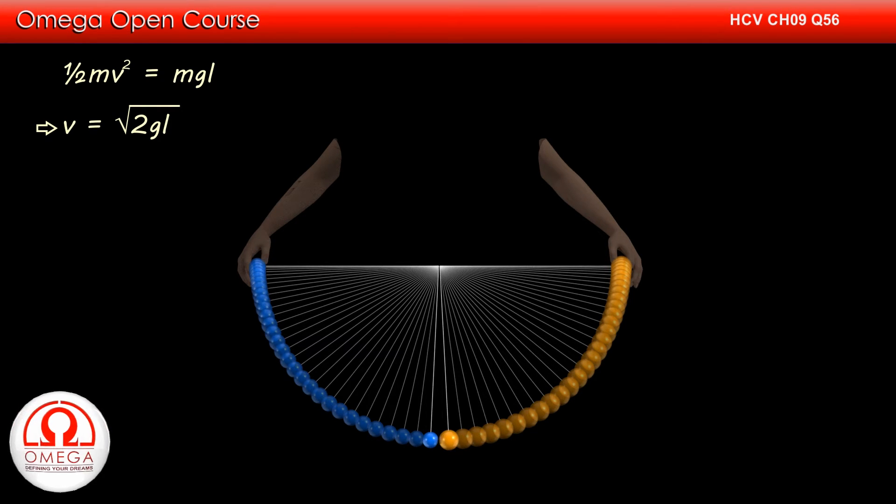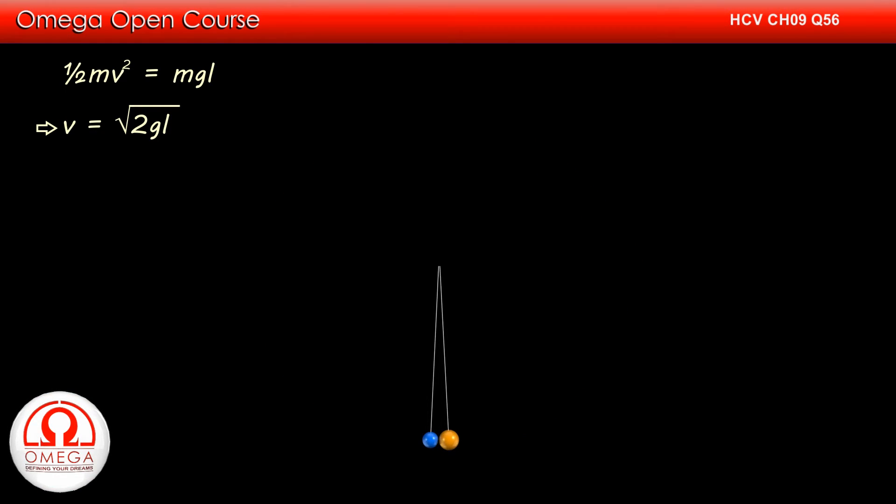Since the result is independent of mass, both the balls will gain root 2gl speed just before the collision. Thus just before the collision, both the balls have speed v in opposite directions.